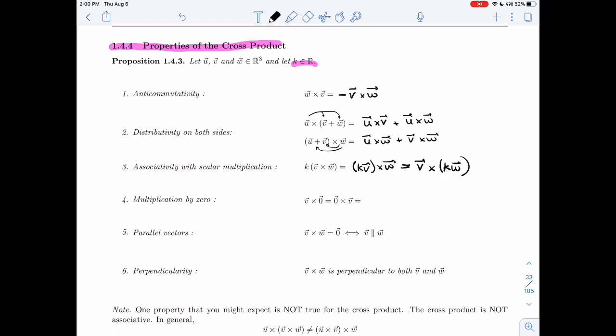If I multiply by the zero vector, I get the zero vector back. Careful, not zero. The zero vector, the cross product, gives us a vector.